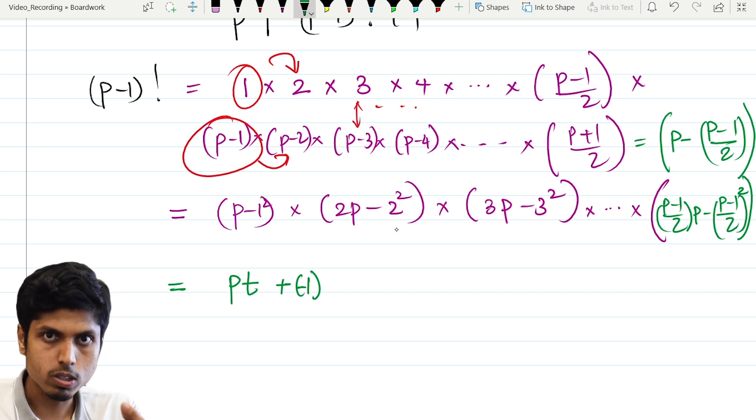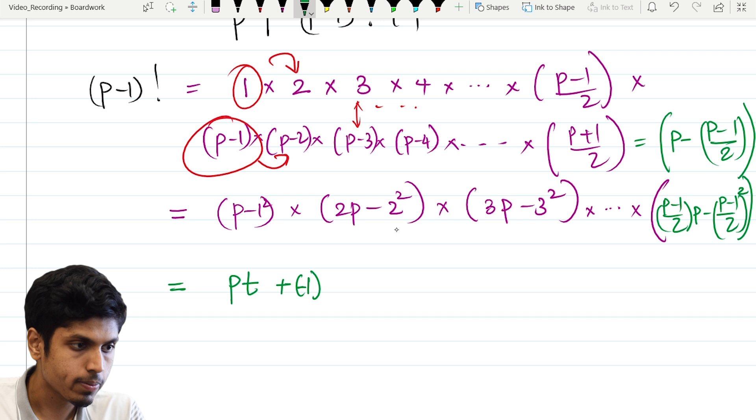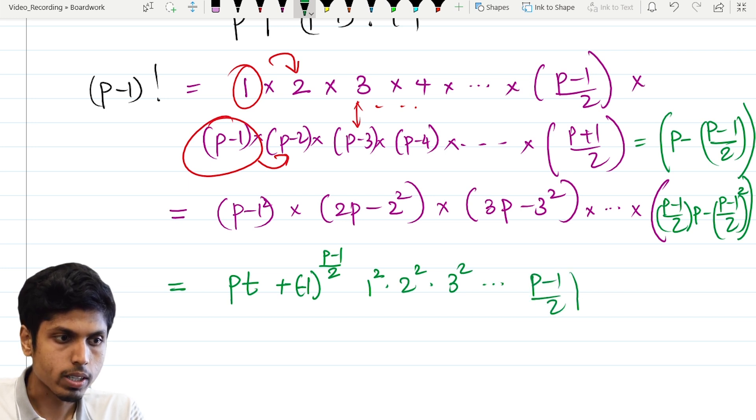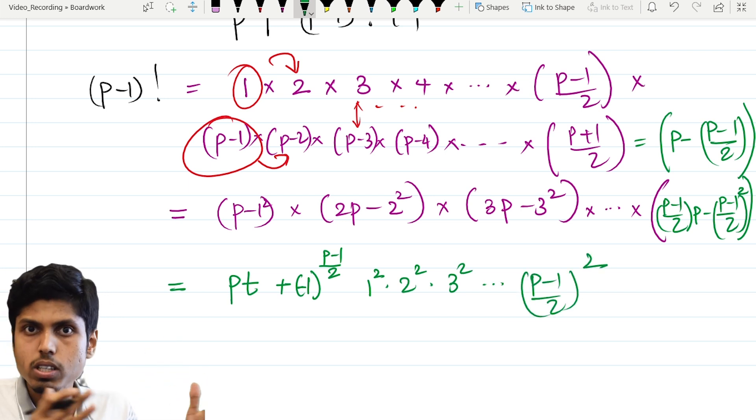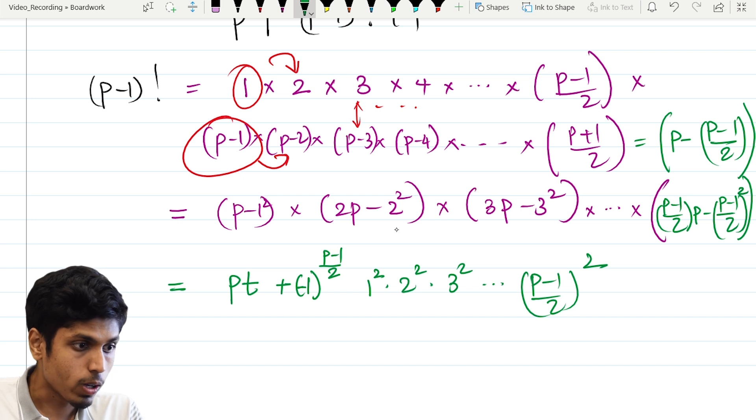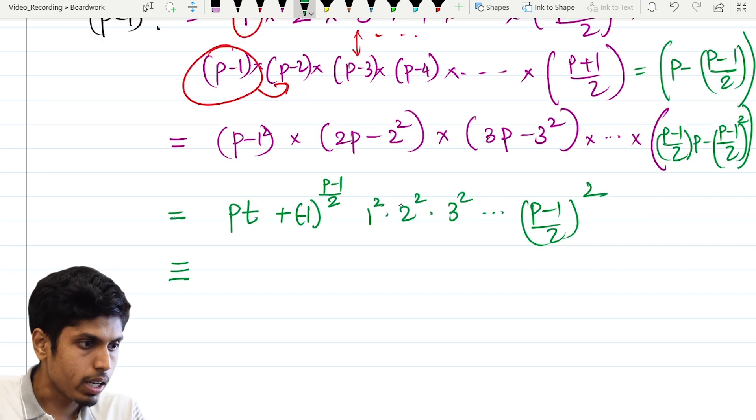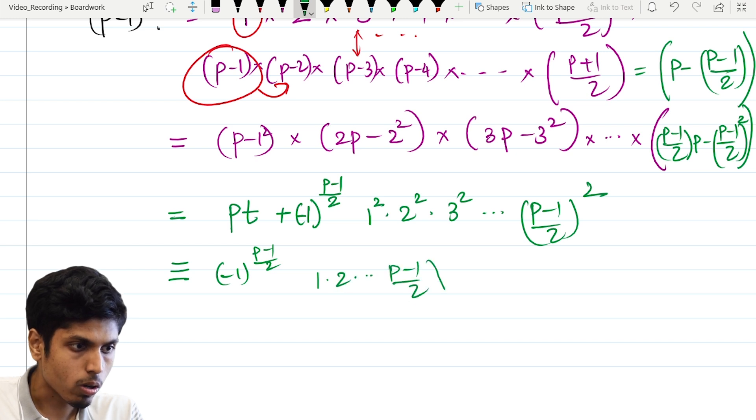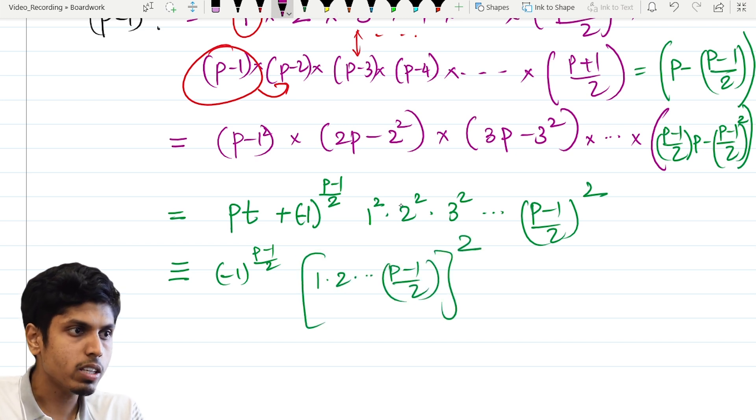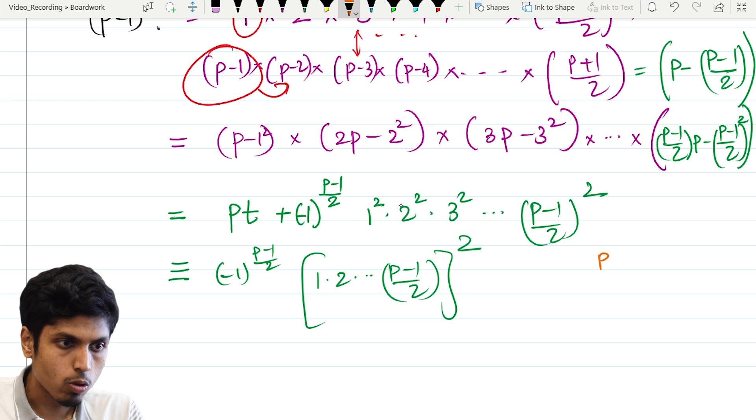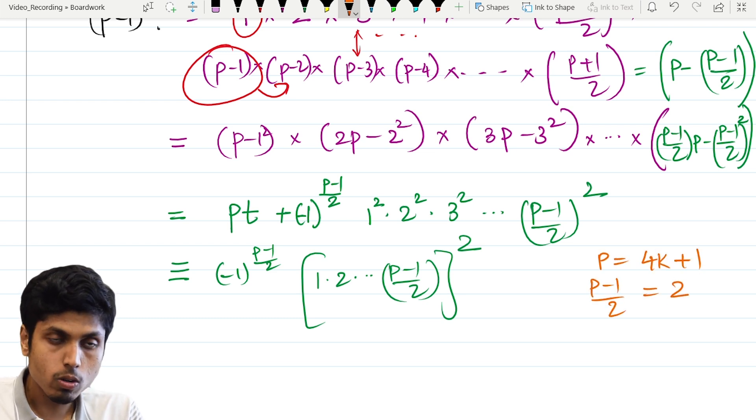So I will just represent it by p times some t, and then you will have minus 1 power, how many terms are there? 1 square, 2 square, 3 square and p minus 1 by 2 whole square. So p minus 1 by 2 terms are there. So minus 1 power p minus 1 by 2 into 1 square times 2 square times 3 square till p minus 1 by 2 the whole square. Because all the other terms are multiples of p though. So hence this is congruent to minus 1 power p minus 1 by 2 into 1 into 2 till p minus 1 by 2 the whole square. But remember, p is of the form 4k plus 1.